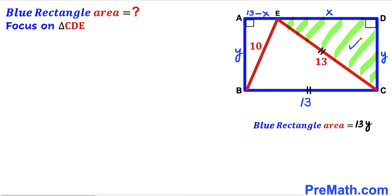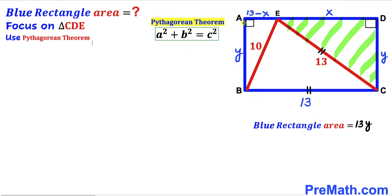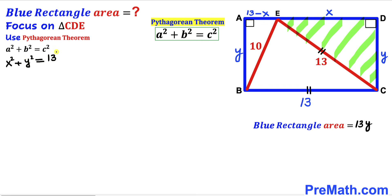Let's focus on right triangle CDE and apply the Pythagorean theorem on this triangle. The Pythagorean theorem states A squared plus B squared equals C squared. In our case the hypotenuse is 13 whereas the two other legs are X and Y. Filling in the formula gives us X squared plus Y squared equals 13 squared, which simplifies to X squared plus Y squared equals 169. I am going to label this as equation number one.